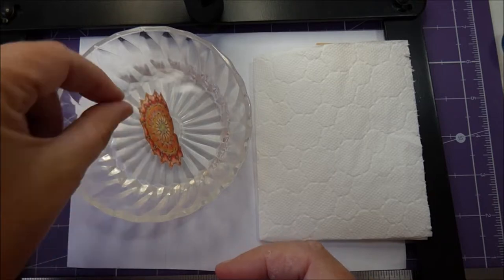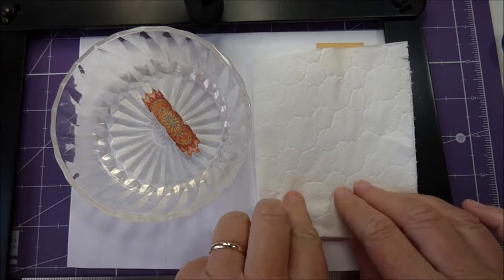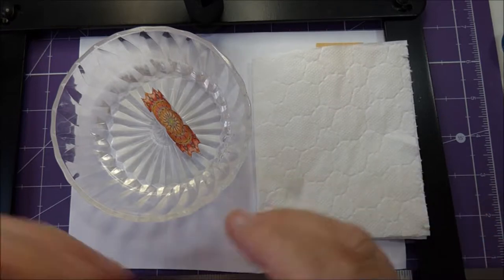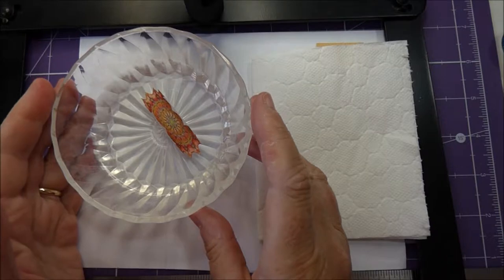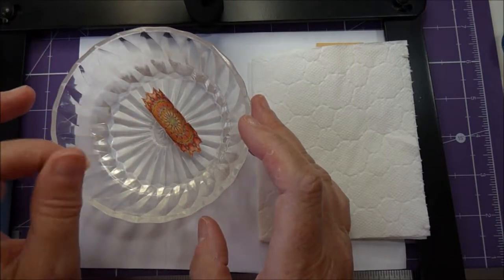Pop the decal into the water. Don't worry if it curls up. You have to leave it for about 30 seconds or so. The decal will be able to slide off the backing paper.